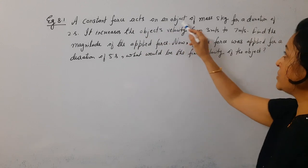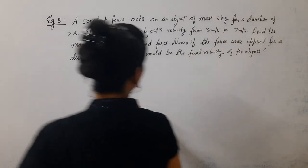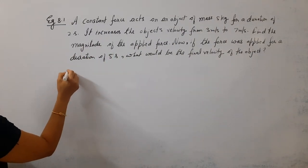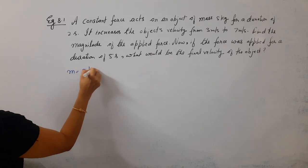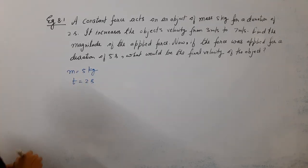A constant force acts on an object of mass 5 kg for a duration of 2 seconds. So here you have mass of 5 kg and duration of time of 2 seconds.